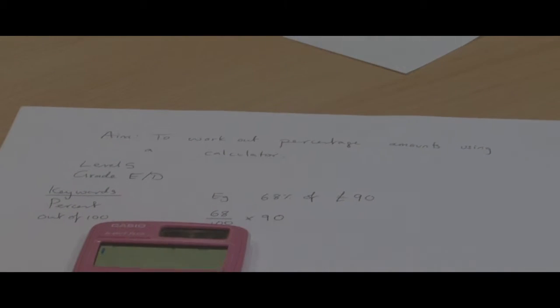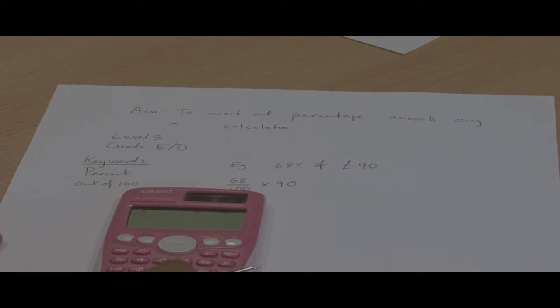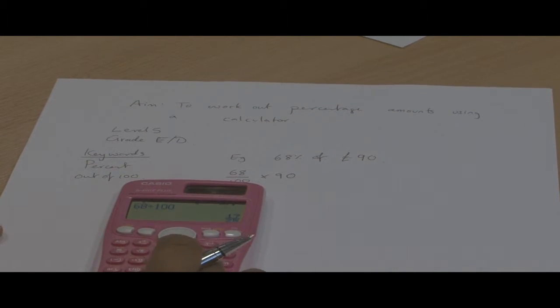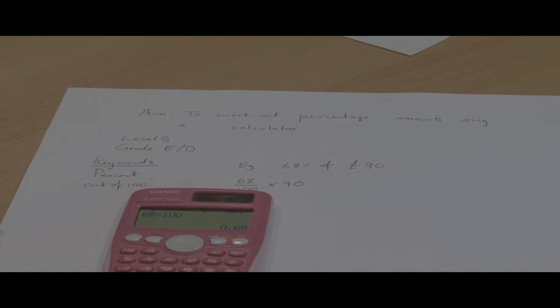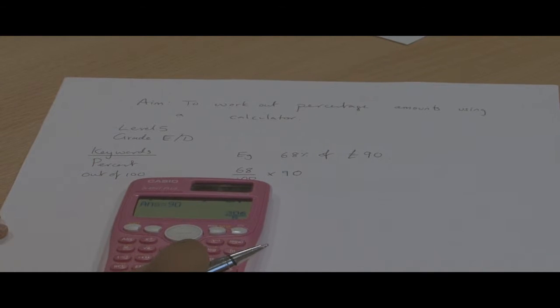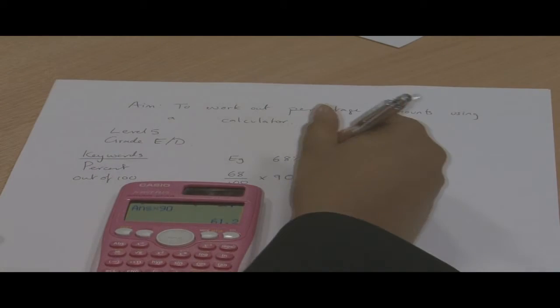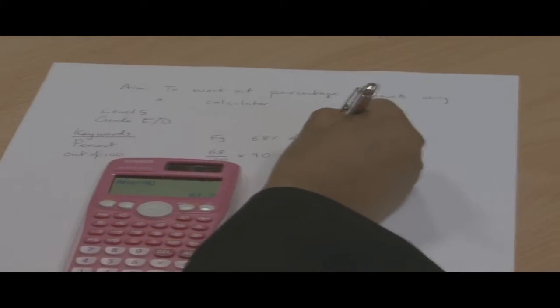So we use our calculator, do 68 divided by 100, pressing the S to D button changes it to a decimal, times by 90, gives our answer of £61.20.